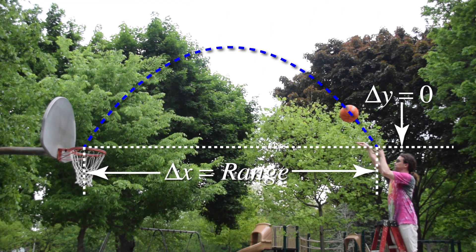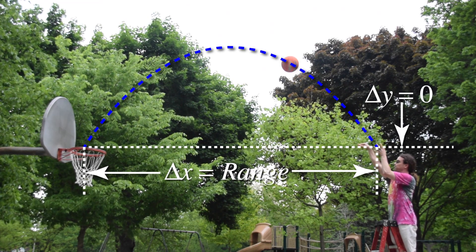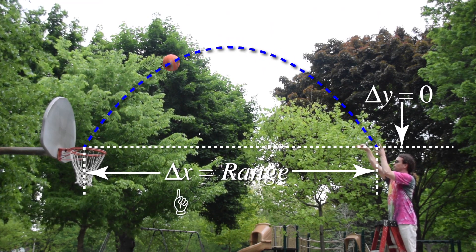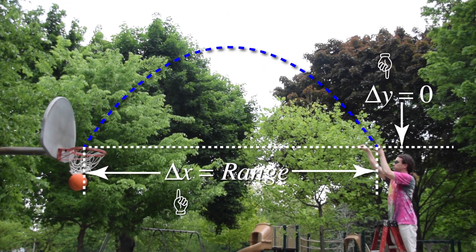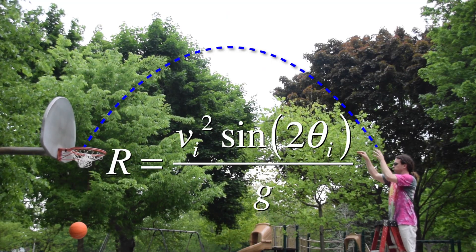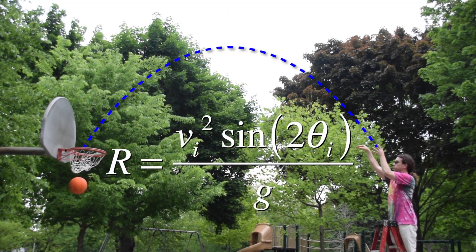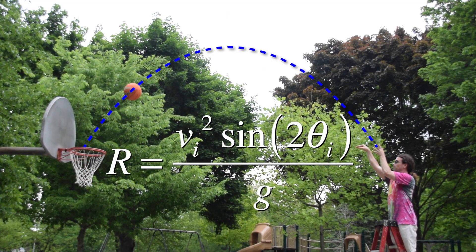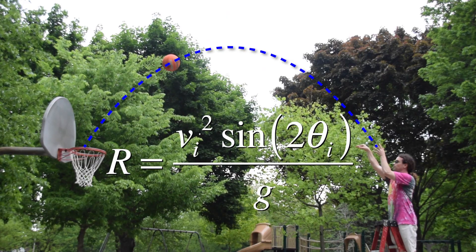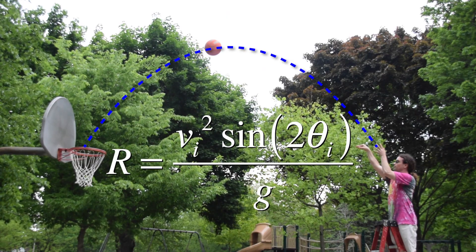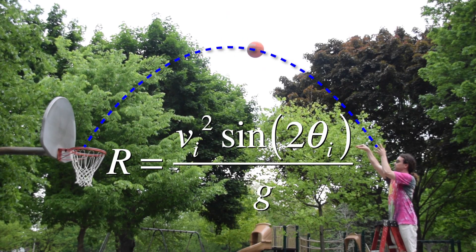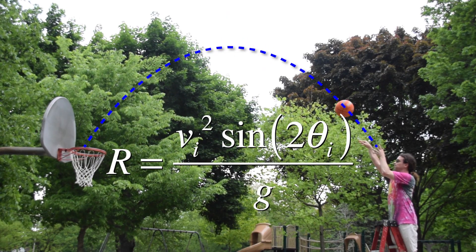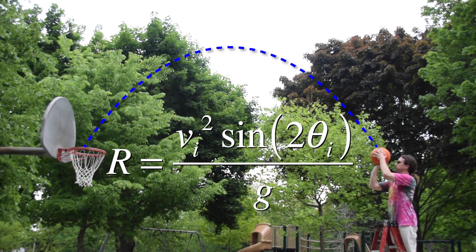Remember, the range of a projectile is defined as the displacement in the x direction when the displacement in the y direction equals zero. And the range equation is: the range equals the magnitude of the initial velocity squared times the sine of two times the launch angle, all divided by the acceleration due to gravity.